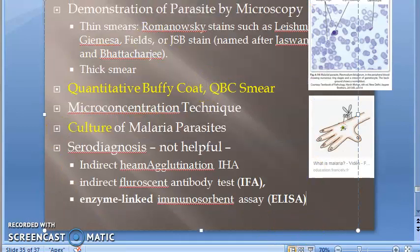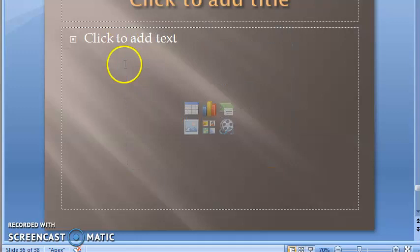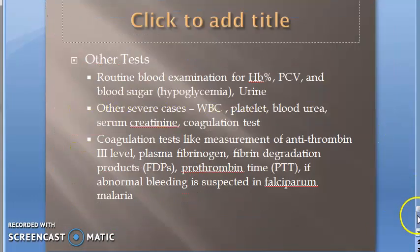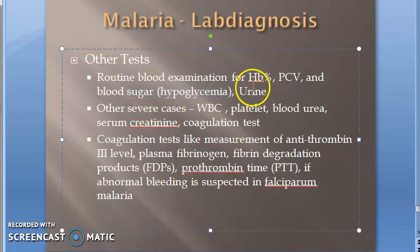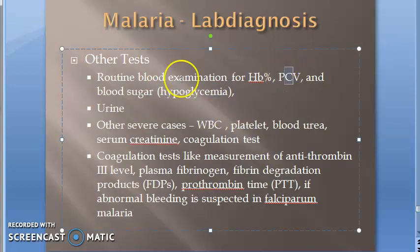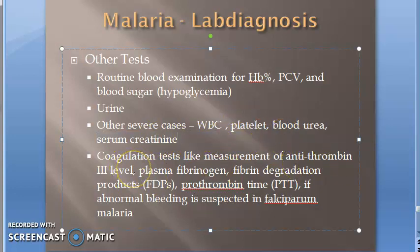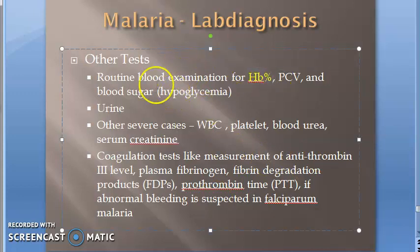Other tests that may help include blood examination for haemoglobin, PCV, and blood sugar — because malaria can lead to hypoglycemia. Urine examination is done to check for blackwater fever. In severe cases you can check WBC, platelet count, blood urea, serum creatinine, and coagulation tests including antithrombin-3 level, plasma fibrinogen, fibrin degradation products, and prothrombin time.